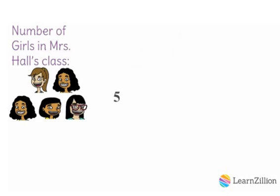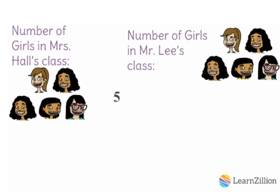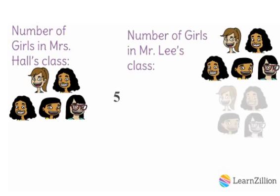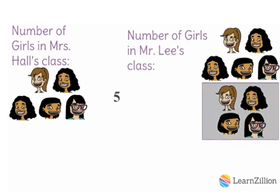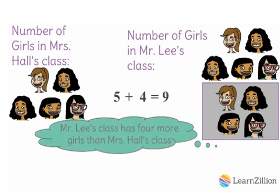Mrs. Hall's class has five girls. If we add four more girls, we would get nine, which is the same number of girls in Mr. Lee's class. Therefore, Mr. Lee's class has four more girls than Mrs. Hall's class.